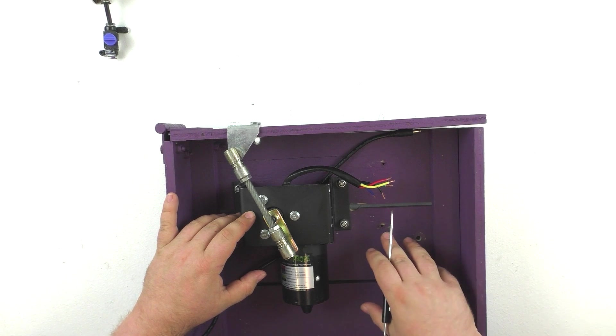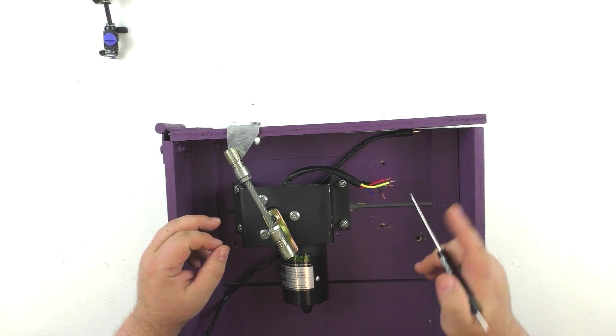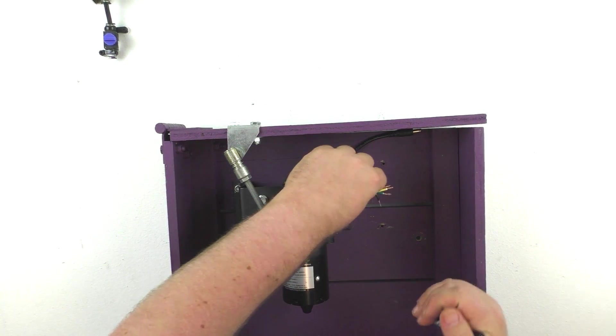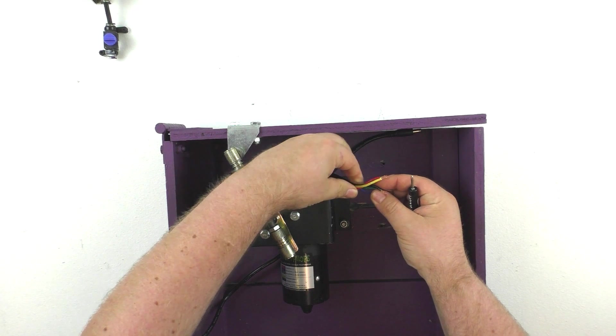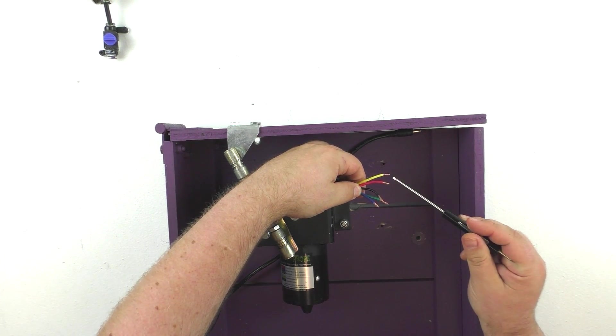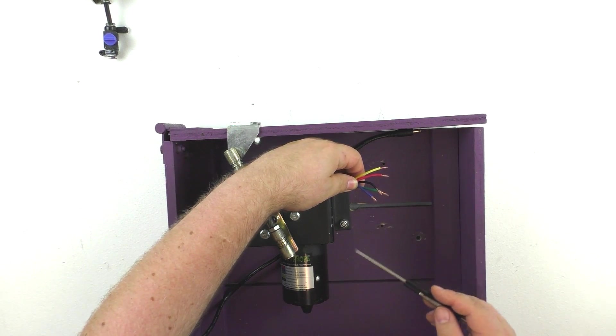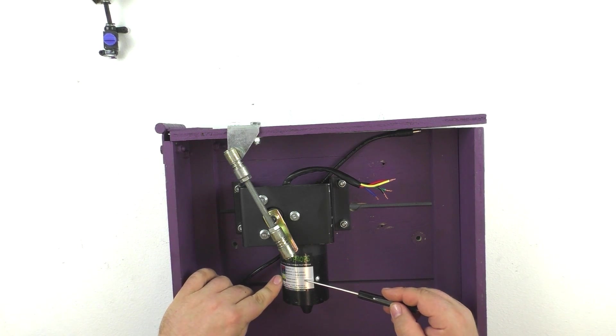This kit can be ordered with or without a controller, and we're going to show it in operation without a controller first. As you can see here, the motor included with the kit comes with five wires. The function of the different wires is listed on the sticker that's applied to the motor.